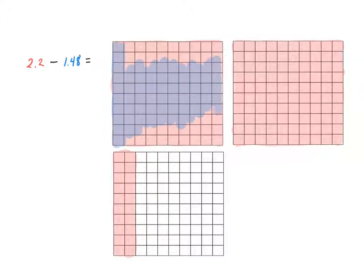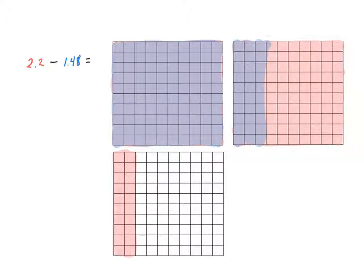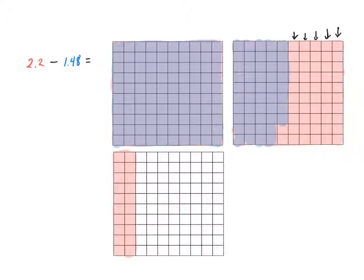Starting at the top, I'll shade in one whole and forty-eight hundredths. So this entire square is one whole, shaded in. Then I need forty-eight hundredths: four tenths — one, two, three, four tenths — and eight hundredths: one, two, three, four, five, six, seven, eight hundredths — completely shaded in. Since this is subtraction, my answer is the part that is left. The red part that remains is the answer. I see seven full tenths, no extra holes, and then two hundredths left over. So my answer is seventy-two hundredths.